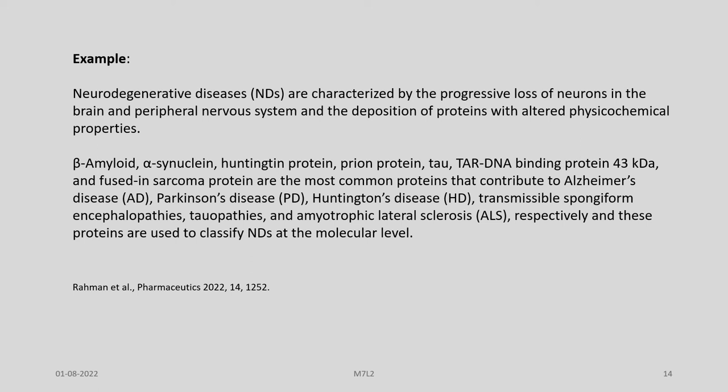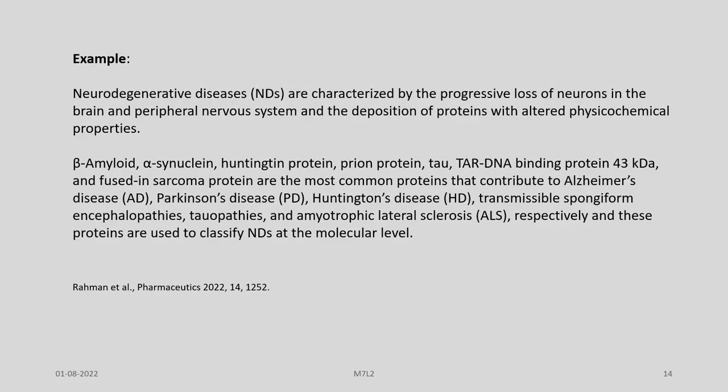CRISPR-Cas9 technology is versatile and can be used in various kinds of gene therapies, particularly those controlled by monogenic genes. However, as this technology is quite flexible, it is also possible to transfer multiple genes and theoretically attempt gene therapy involving polygenic factors. Let us take some examples of potential areas where gene therapy through CRISPR-Cas9 can be undertaken.